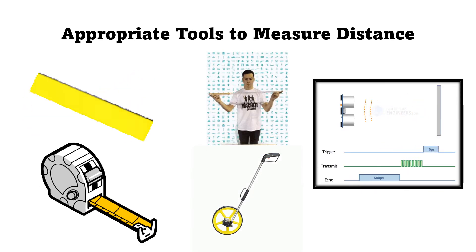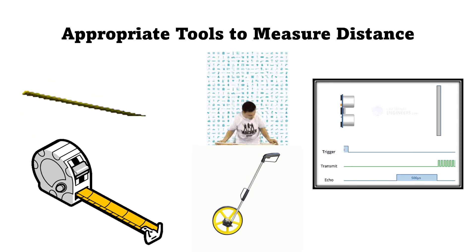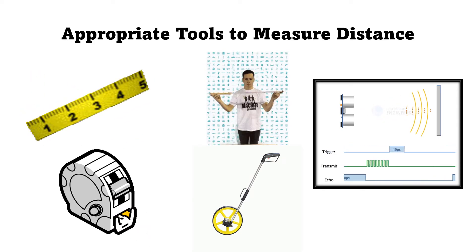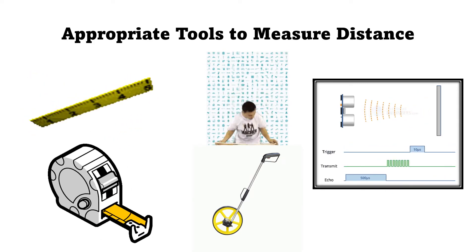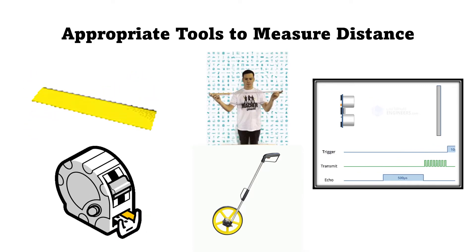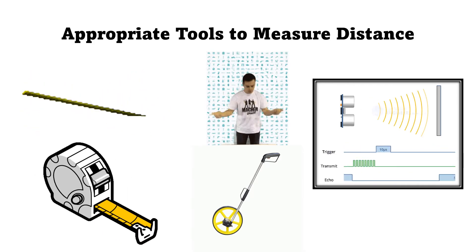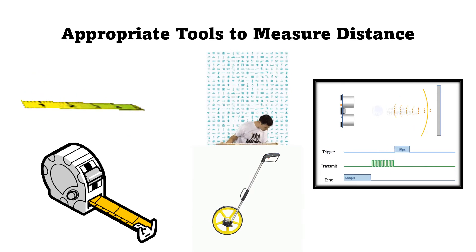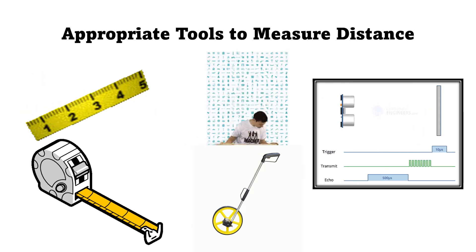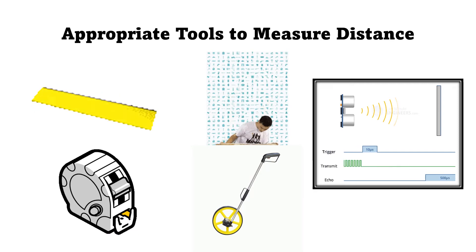There are appropriate tools and ways to measure distance so that you can tell whether the object is near or far. Distance is measured using tools such as a ruler, meter stick, tape measure, measuring wheel, and ultrasonic distance measurer.